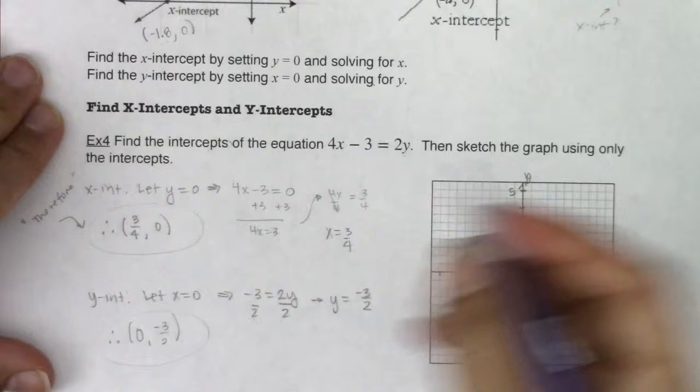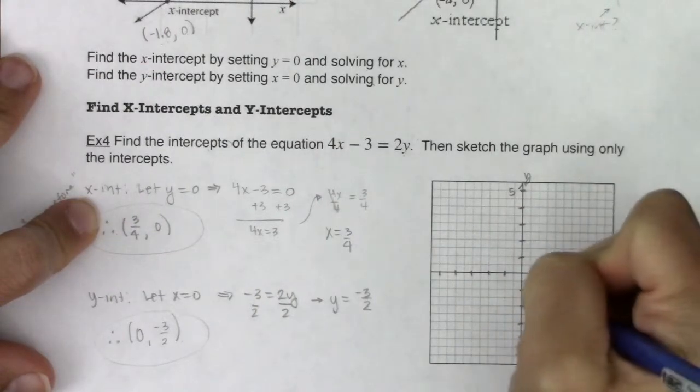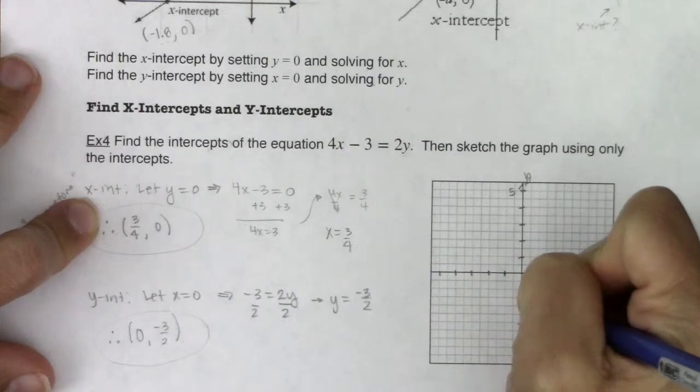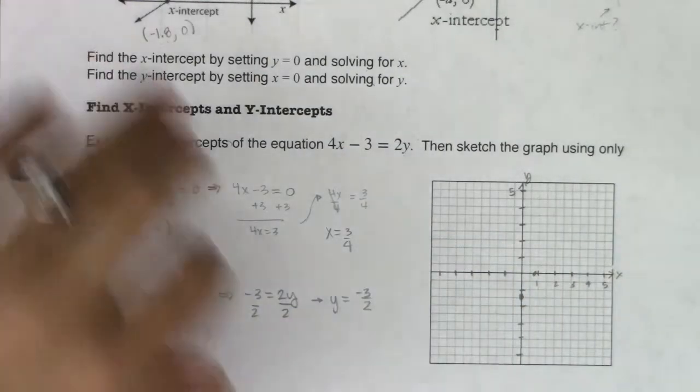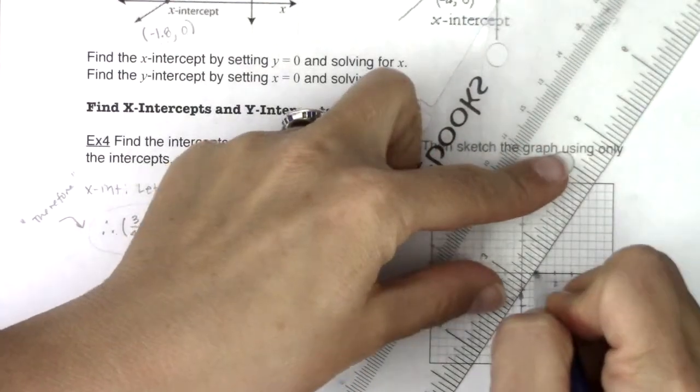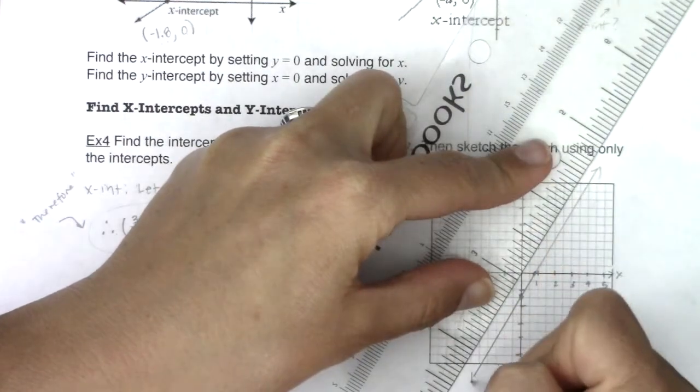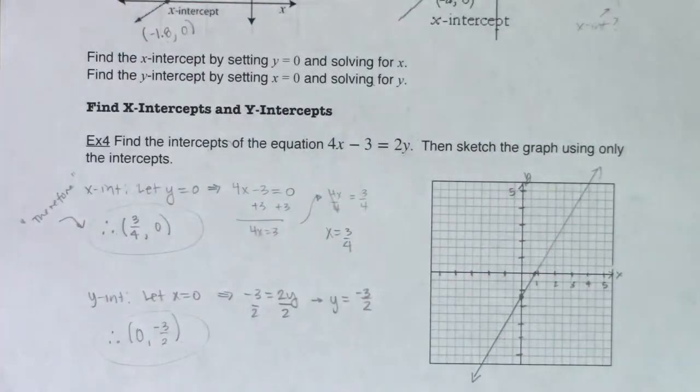So what do we have? We have 3 fourths comma zero somewhere in there. And then I have 0, negative 3 and a half. So I've got that point there. So let's go ahead, let me get my ruler. Two points determine a unique line. So if I'm looking at this, there we go. My domain's all real numbers. My range is all real numbers.